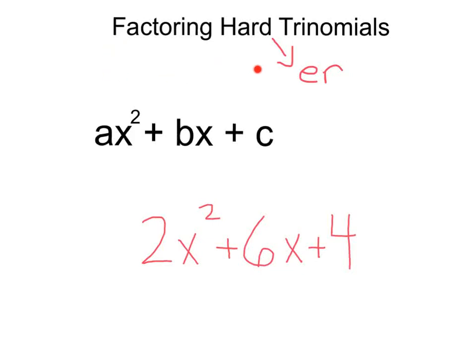All right, factoring hard trinomials. Still three terms, but this time we do have a coefficient, a number, next to the x squared term.